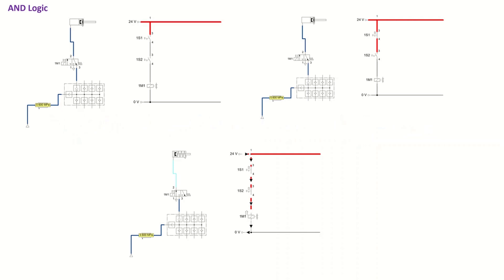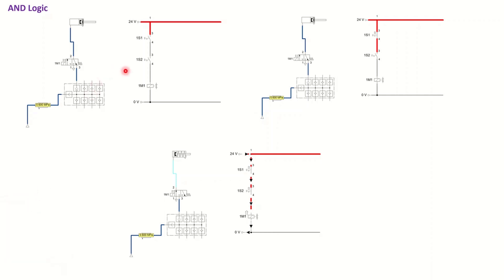The first circuit I have here is showing AND logic. As expected for any electro-pneumatic circuit, we need to have two main circuits. One of them is going to contain pneumatic components and the other one is going to be based on electric components. If we just focus on the right side which contains the electric components, we'll see we have two switches, and these two switches are helping us to have the AND logic.